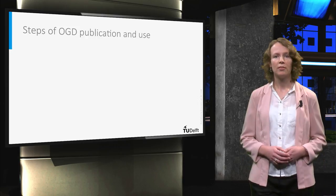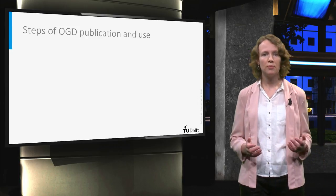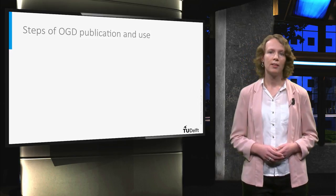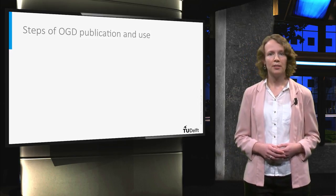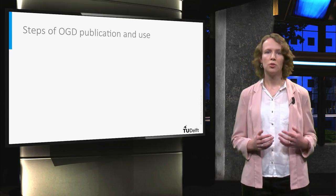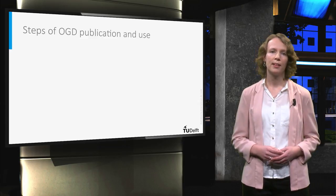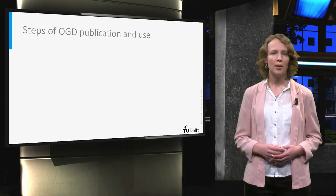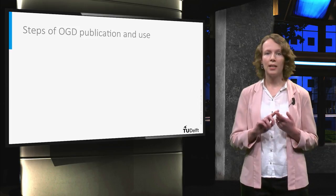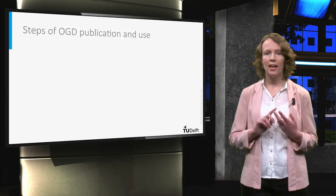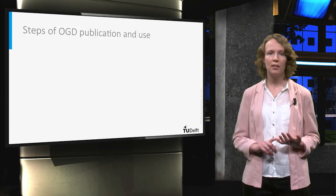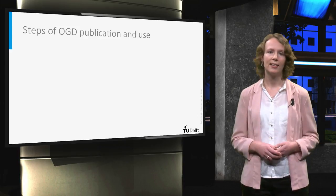Fourth, when open government data is found, this can subsequently be used. Often, the data user needs to download the data to be able to work with it. Open government data can be used in many different ways, for instance by cleansing, analyzing, visualizing, enriching, and combining and linking the data.